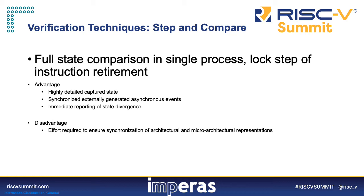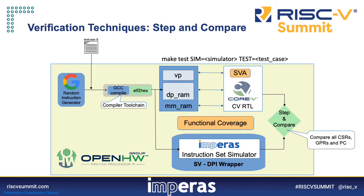Finally, we come to the step and compare method, which features full state comparison running in a single process. We run until there is a lockstep of instruction retirement in both the RTL and the reference model, then compare the state of the two devices within that single process. Here you can see the flow implemented by the open hardware group for step and compare — it looks similar to the previous diagram but this is now a single process, meaning both model representations run at the same time so the step and compare is done at runtime rather than as a post-process operation.